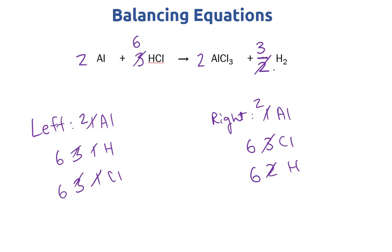Let's double check: two aluminums on the left and right; six hydrogens and six chlorines on the left; two aluminums, six chlorines (2×3), and six hydrogens (3×2) on the right. Everything is fully balanced. This technique applies any time you can't find a whole number coefficient, and it comes up most often with diatomic molecules like H2, N2, and F2.